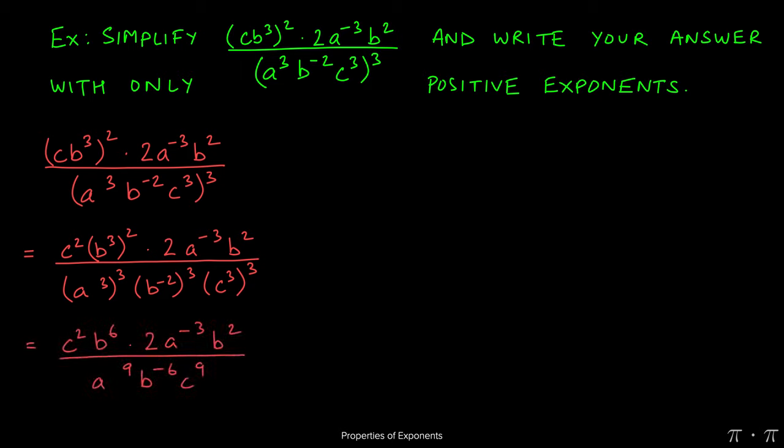When we do that, we get c squared as it is, b raised to the sixth, the two comes along, the a to the negative three and b squared come along as well.